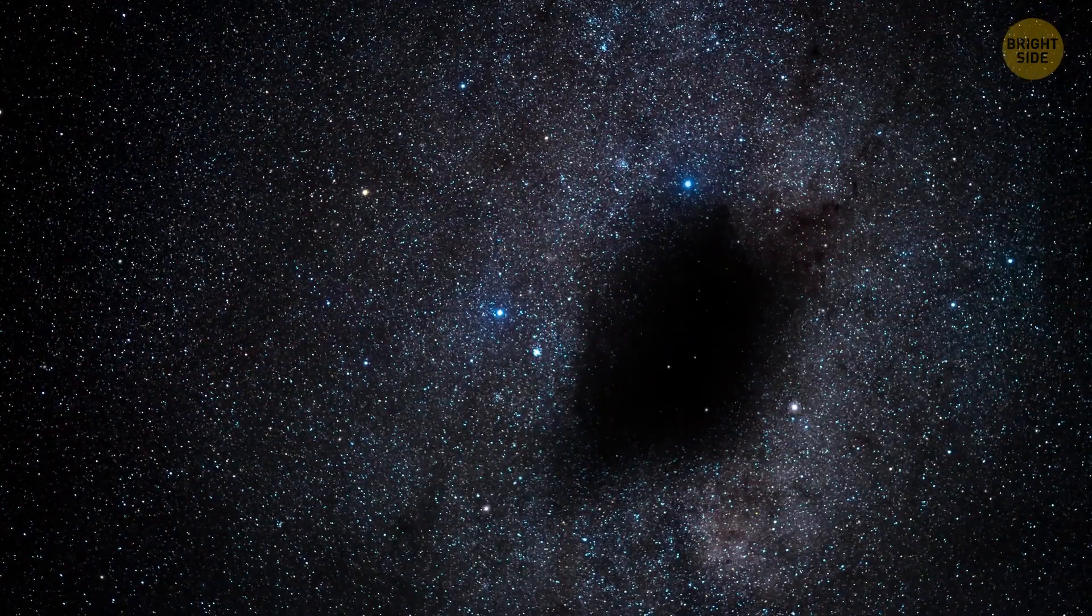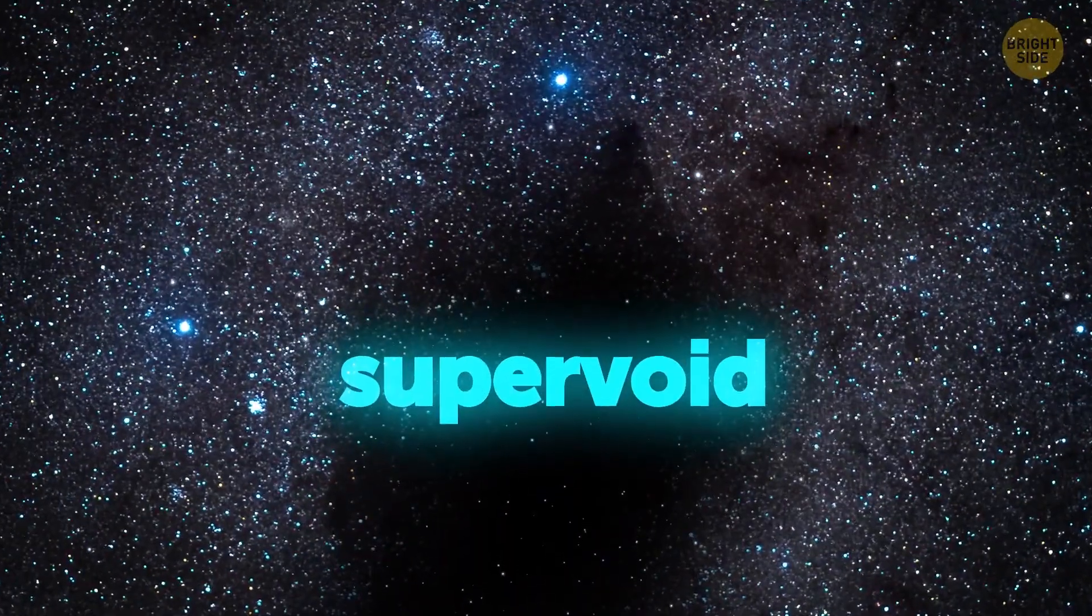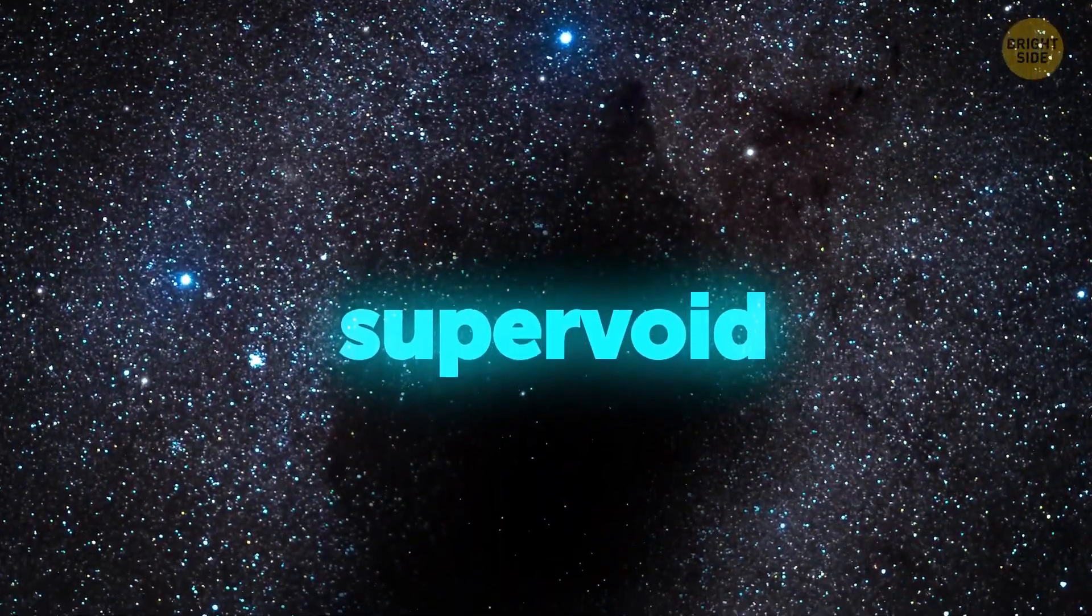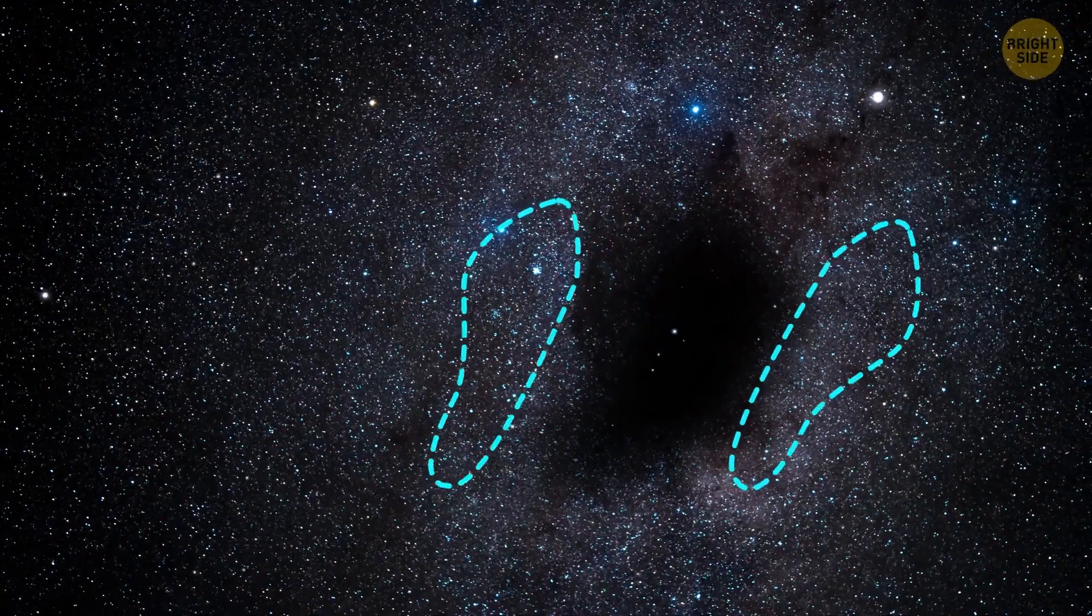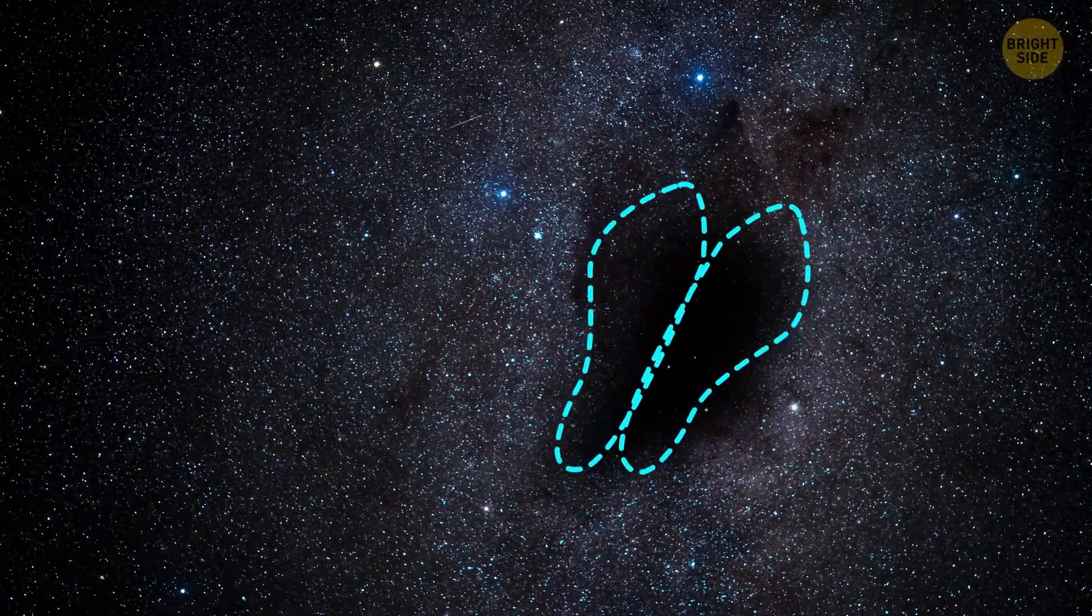The Boötes Void is one of the most massive ones. It has even earned the title of Super Void. Astronomers think it might be the result of a few smaller voids merging together.